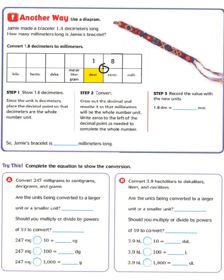Step two says to cross out the decimal and rewrite it so that millimeters will be the whole number unit. Write zeros to the left of the decimal point as needed to complete the whole number. Step three is to record the value with the new units. So 1 and 8 tenths decimeters equals 180 millimeters because we've now moved over two place values and we've added our zero. So Jamie's bracelet is 180 millimeters long.